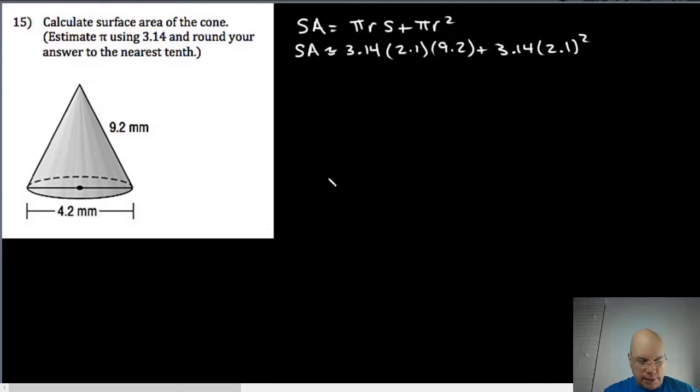3.14 multiplied by 2.1 multiplied by 9.2—that first term is 60.6648 ten-thousandths, plus 3.14 multiplied by 2.1 squared.